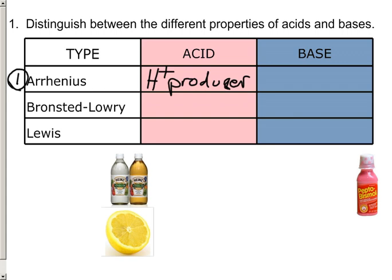If you had a substance that you put in water and it produced hydroxide ions, then we would say that it's an Arrhenius base.